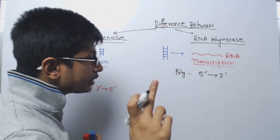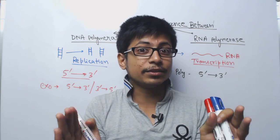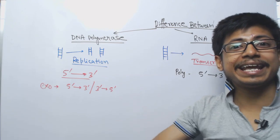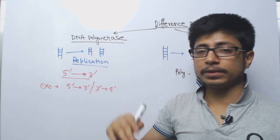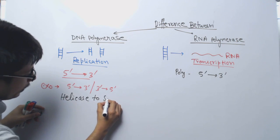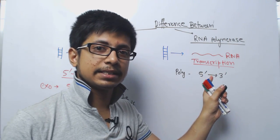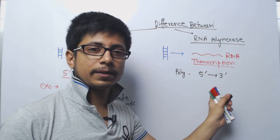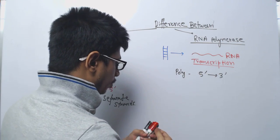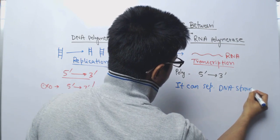For both DNA replication and transcription, the strands of the DNA need to be separated from each other first. That process cannot be achieved by DNA polymerase itself — it requires an accessory protein known as DNA helicase to unwind and open the strands. On the other hand, RNA polymerase does not require any helicase; one of its subunits can separate the strands of the DNA prior to transcription on its own.